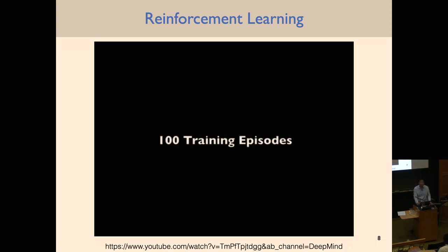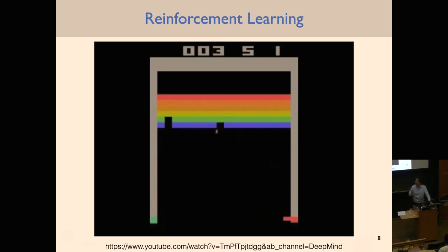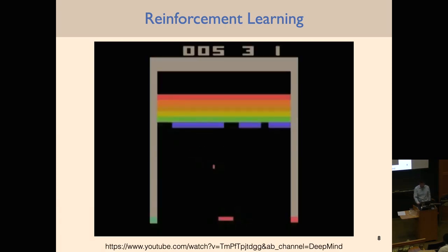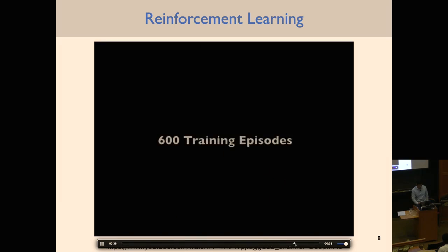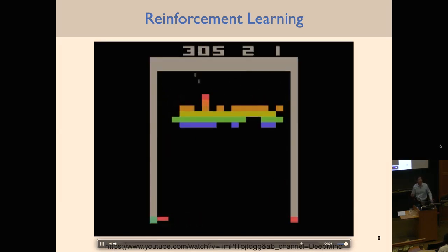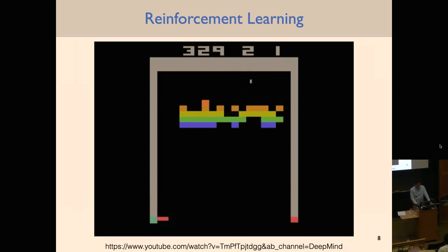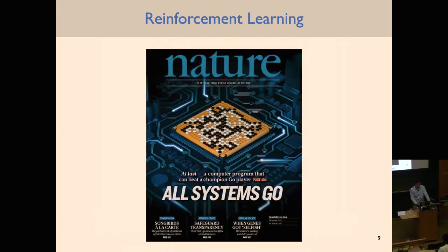Over the last few years there's been a lot of progress in RL. About eight years ago there was major progress using RL to solve Atari video games, achieving superhuman performance on many tasks. Another famous example from around 2016 is the AlphaGo system from DeepMind, which famously beat the world Go champion Lee Sedol using deep reinforcement learning techniques.